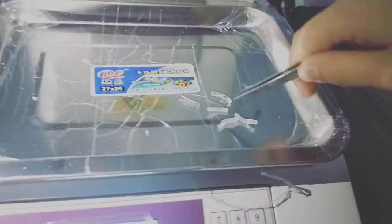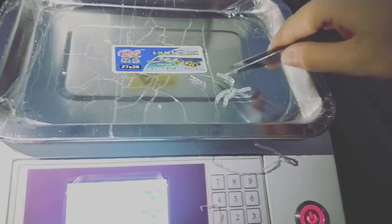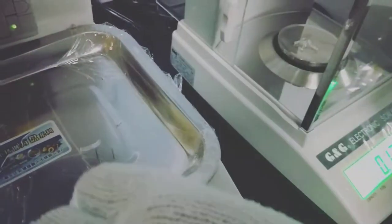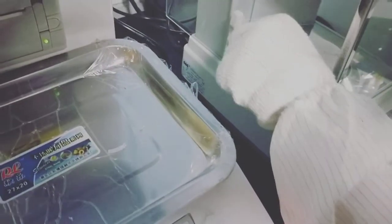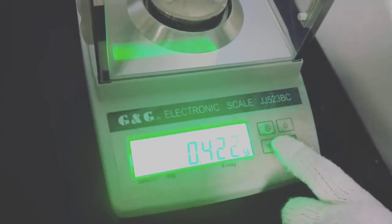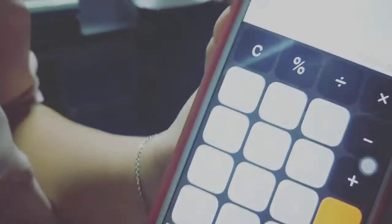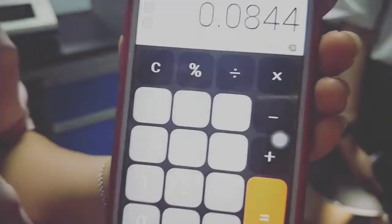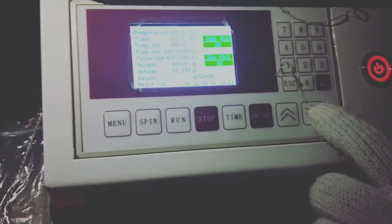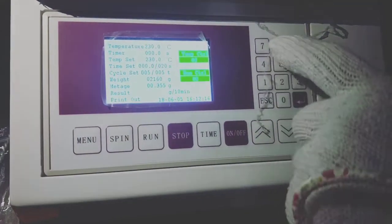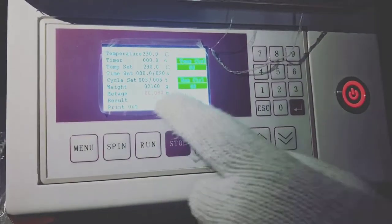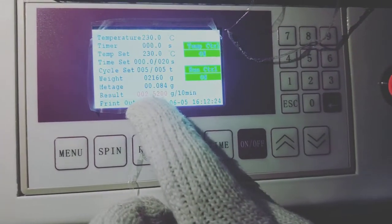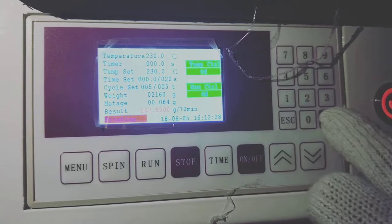Then we have already got five samples. We measured the five samples weight on the balance. We get those five samples weight is 0.422, so each piece is 0.0844. Then we input the sample average, 0.0844, then enter. Then we will get the results, 2.52 grams per 10 minutes, and print the result.